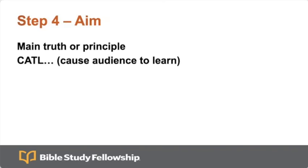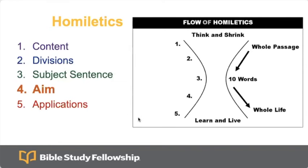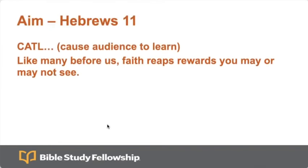Step four is our aim. This is when we get away from the facts and try to figure out the main truth or principle from the passage we've read. We want this to cause the audience to learn something. In this case, I said it causes the audience to learn: like many before us, faith reaps rewards you may or may not see.